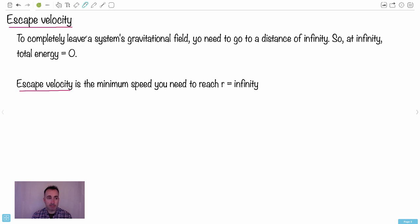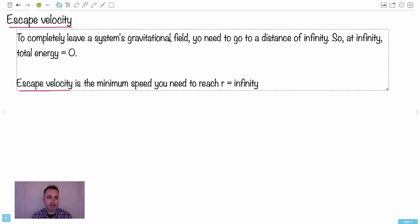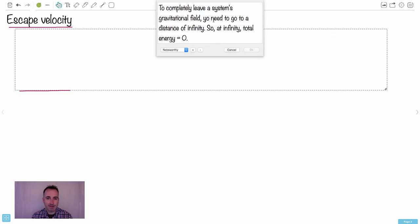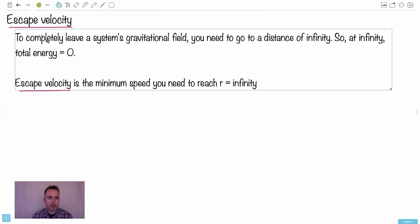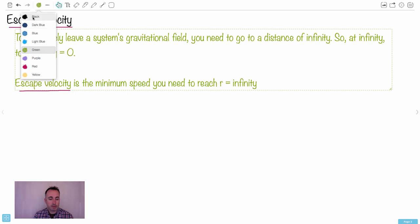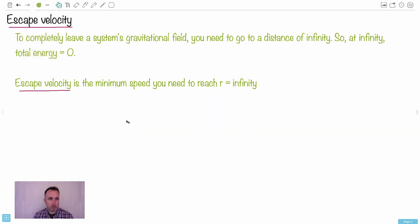Let's go to the next one. Escape velocity. This one I love, because if you want to leave a system's gravitational field, I mean completely. I didn't mean to say yo need. I realized I had a spelling mistake. This is just like, all right? So at least I may as well fix it right here. So you need to go to a distance of infinity. So if you want to actually completely leave the gravitational field, you got to get to a distance of the end of the universe or whatever. So at infinity, we define the total energy to be zero. This is the key part right here. That's the part you need.